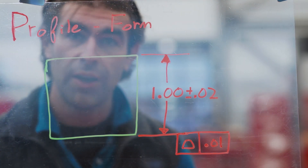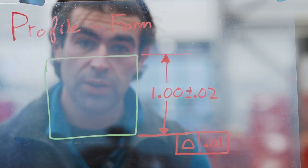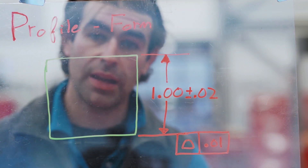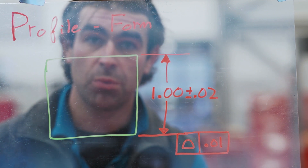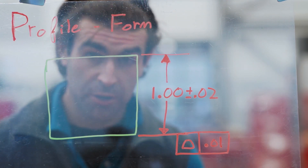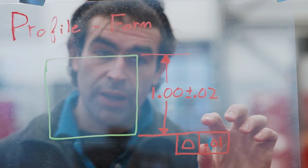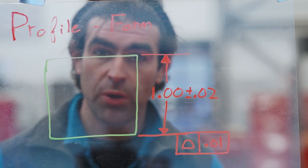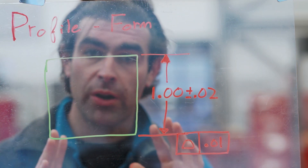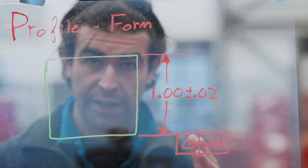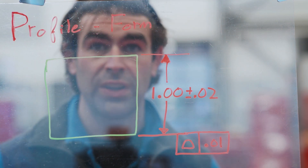Here's an example of profile masquerading as a form tolerance. We have a block with a plus or minus size dimension and a profile of a surface of 10 thou with no datum reference. This does the exact same thing as a flatness tolerance. The boundary of perfect form applies — the part can be no bigger than 10.02, no smaller than 9.98. The profile tolerance has to fit within that 40 thou size tolerance zone, and the surface must lie between two parallel planes that are 10 thou apart.